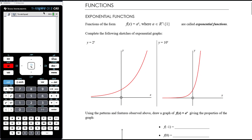We want to complete the sketches of the following graphs. On the left we have y equals 2 to the power of x — looking at what changes when we change the base. When x equals 0, 2 to the power of 0 is 1. When x equals 1, 2 to the power of 1 is 2, so we go through the point (1, 2). When x equals negative 1, 2 to the power of negative 1 is one half. Those points give a good sense of the shape.